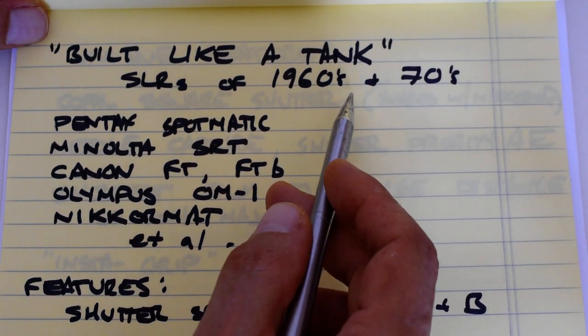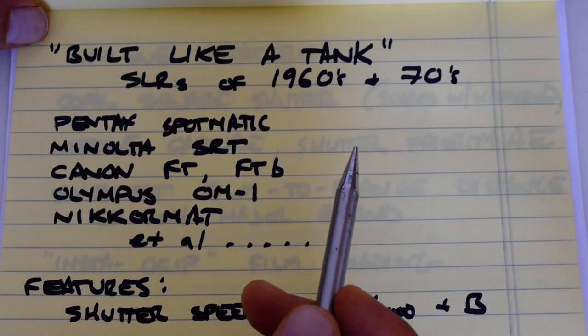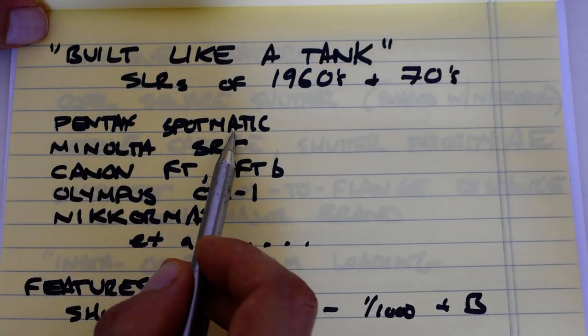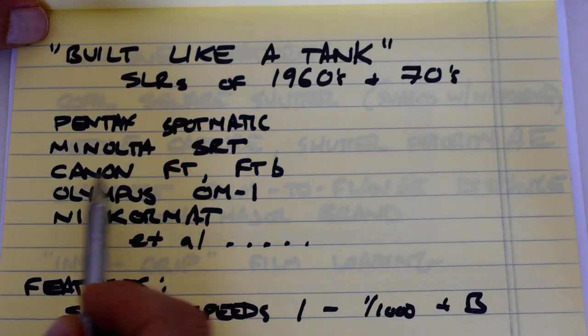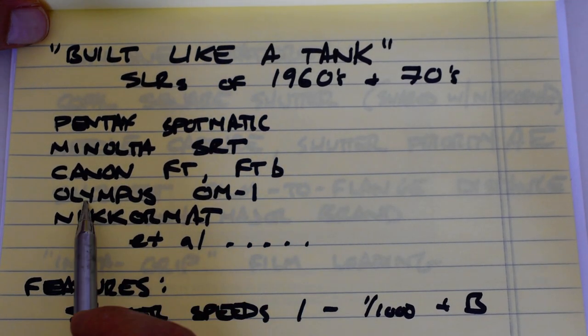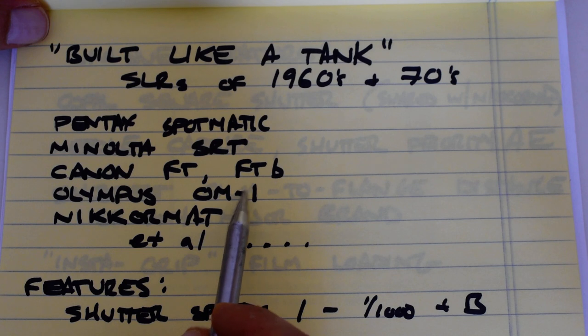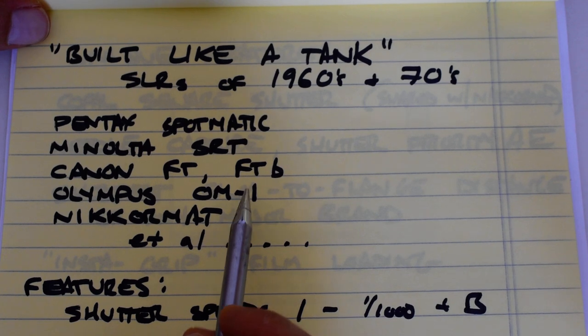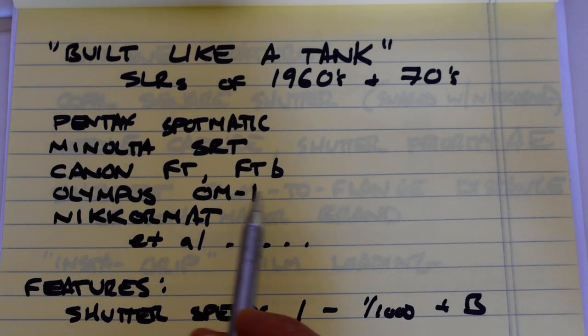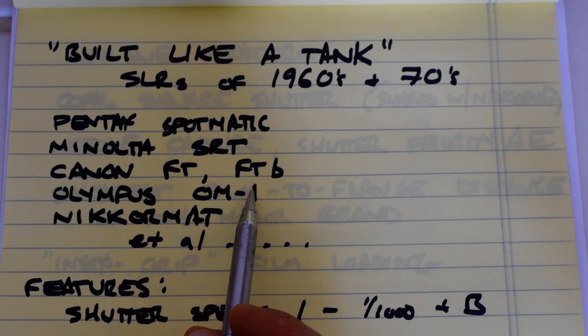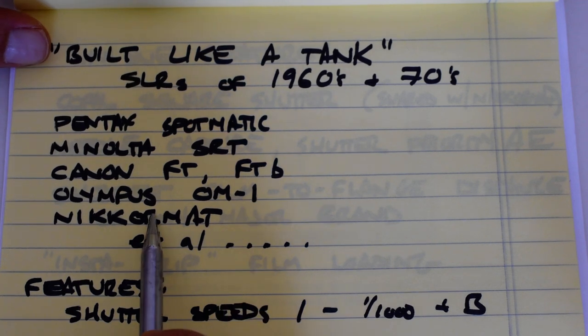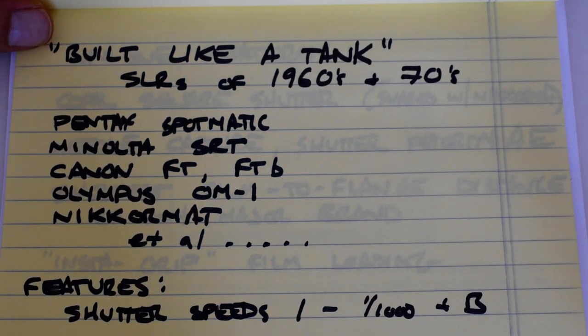These cameras included models such as the Pentax Spotmatic, the Minolta SRT series, the Canon FT and FTB, the Olympus OM-1, although this was a miniaturized version it nonetheless shares the common feature set with these so-called built-like-a-tank genre, and Nycromat and others. This list is representative, not exhaustive.